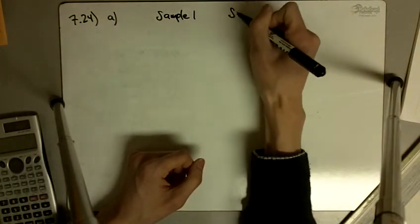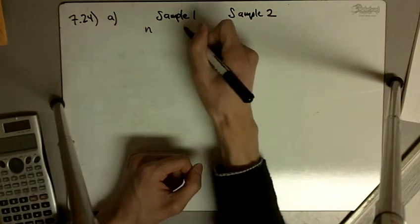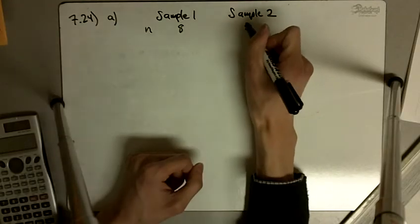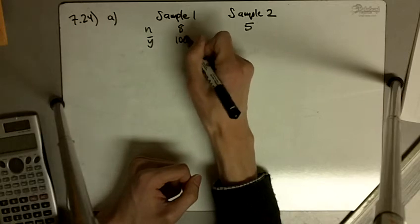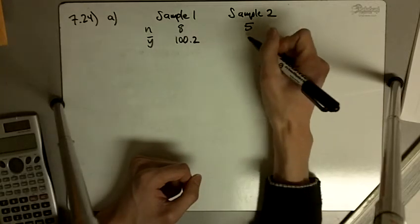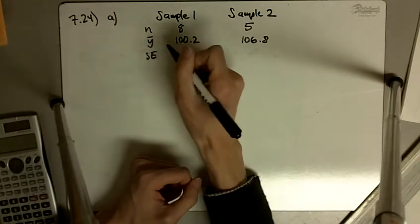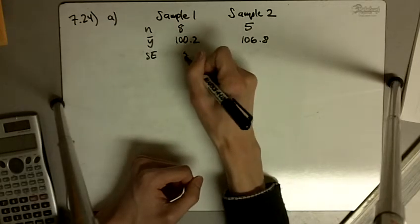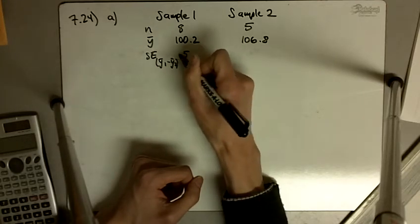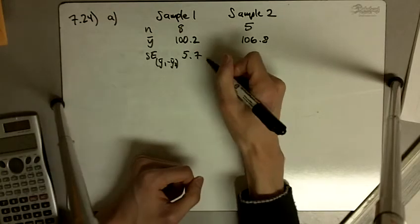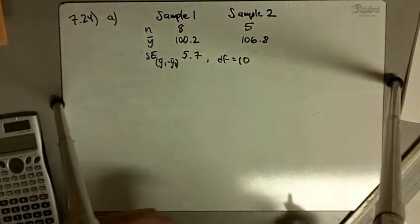Part A says sample 1 and sample 2: n is 8 and 5, y bar is 100.2 and 106.8 for sample 2. The standard error for the difference is equal to 5.7 with degrees of freedom equal to 10.